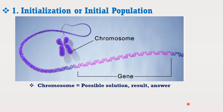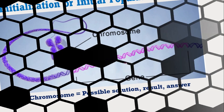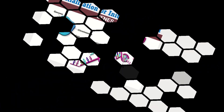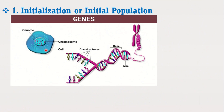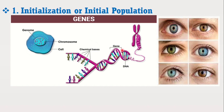It is useful to recall the basics of biology here. Cells are the basic building blocks of all living things, and in each cell there is the same set of chromosomes. Chromosomes are basically strings of DNA. A chromosome consists of genes, commonly referred to as blocks of DNA, where each gene encodes a specific quality — for example, hair color or eye color. Therefore, each chromosome represents the solution based on the gene qualities encoded in it.